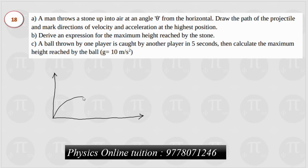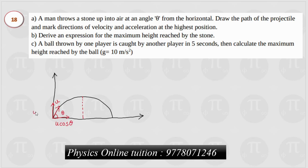I will go into the projectile motion. The ball is launched with initial velocity u at angle theta from the horizontal. If you want to separate the x-direction and y-direction components, the x-direction velocity is u cos theta and the y-direction velocity is u sin theta. We will use these components to analyze the projectile motion.